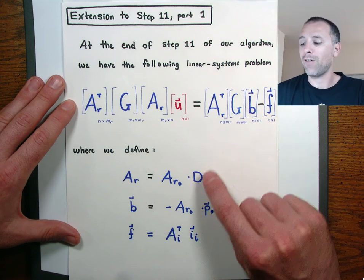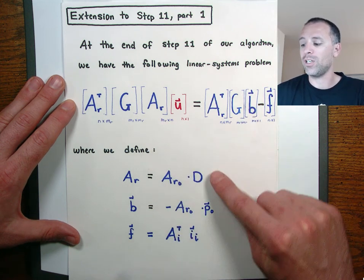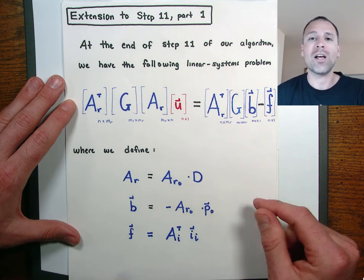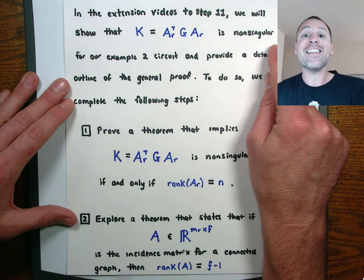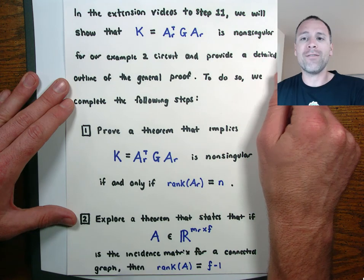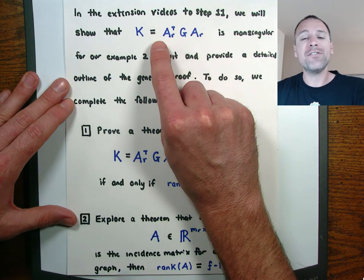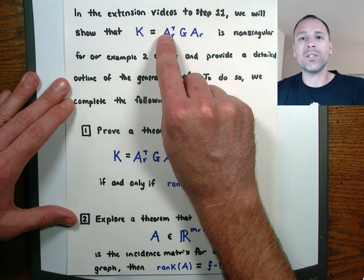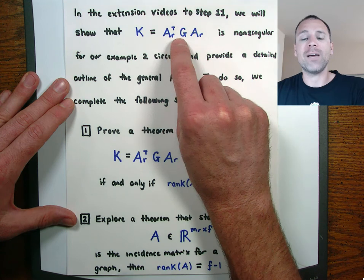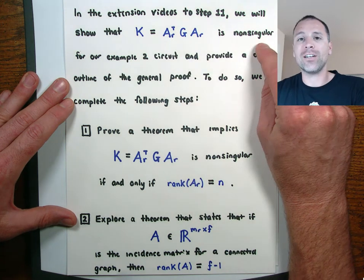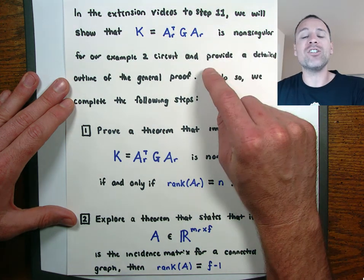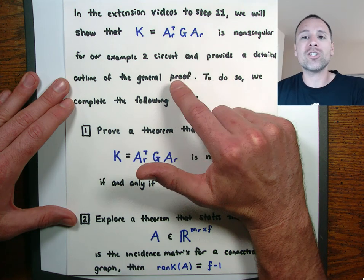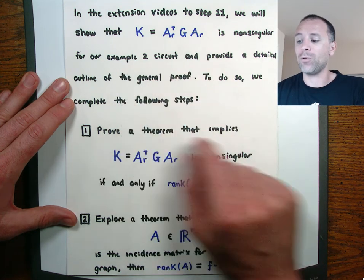For the specific definitions of each of those matrices, you can go back and watch the last part of step 11. In these extension videos for step 11, we're going to show that the stiffness matrix — the coefficient matrix K equal to AR transpose times G times AR — is non-singular, both in the general case and then filtered through the specific circuit we're analyzing in example 2.